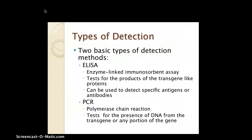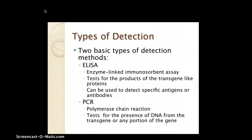PCR is another method we've looked at — we've actually used it in lab. PCR stands for Polymerase Chain Reaction. It tests for the presence of DNA from the transgene, or any portion of the gene. So we're not looking at any translated protein necessarily; we're looking at the DNA strand itself to see whether it contains a genetically modified gene.